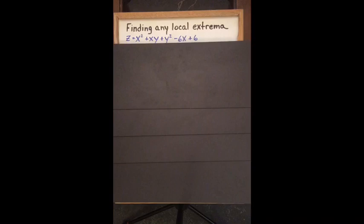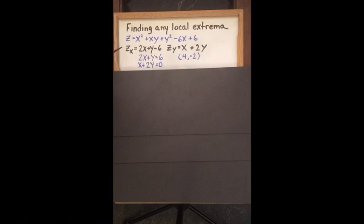Finding local extrema on a given surface. The first step is to find the partials with x and the partials with y, set them both equal to 0, create a system of equations, and then solve it.